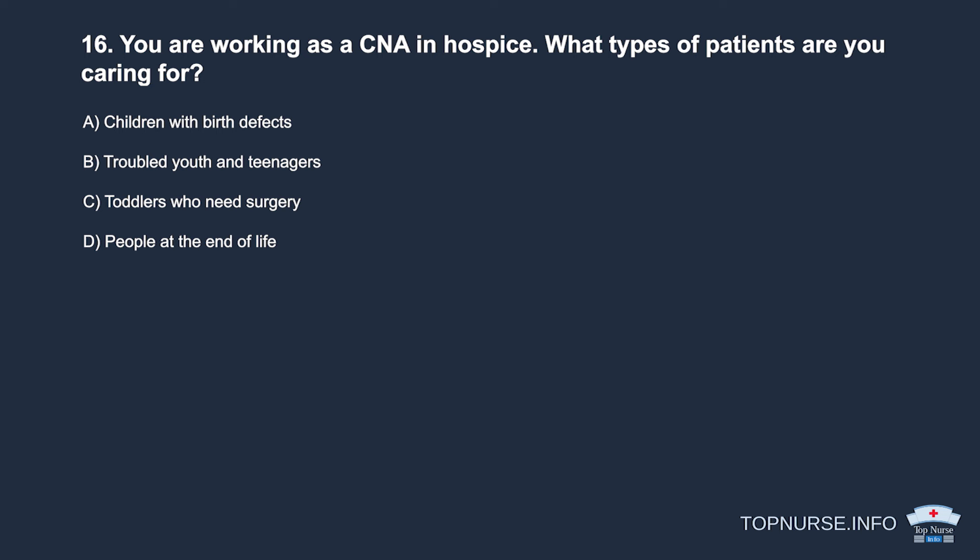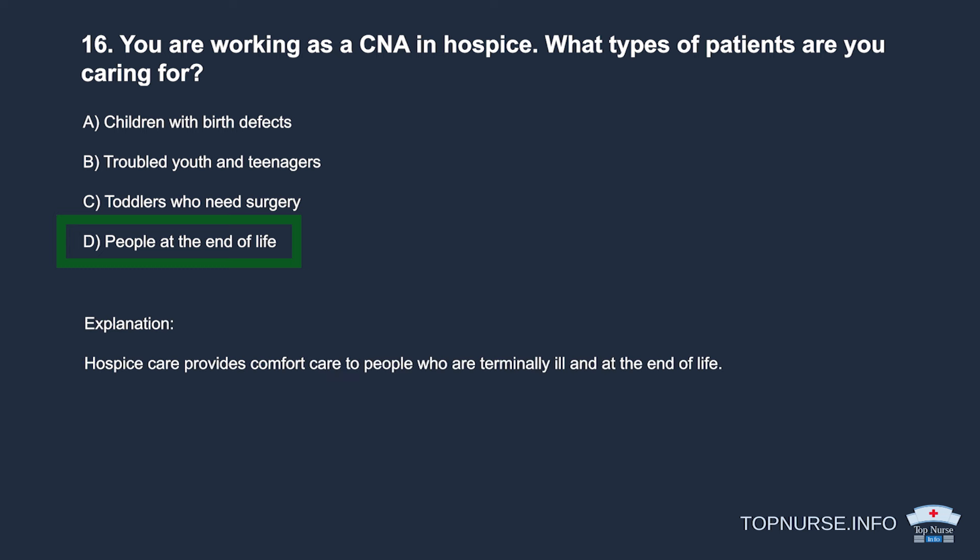Question 16: You are working as a CNA in hospice. What types of patients are you caring for? a. Children with birth defects. b. Troubled youth and teenagers. c. Toddlers who need surgery. d. People at the end of life. Correct answer: d. People at the end of life. Hospice care provides comfort care to people who are terminally ill and at the end of life.